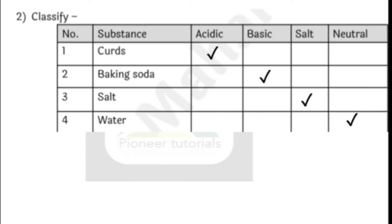Next question. Question number 2: Classify the substance as acidic, basic, salt, or neutral. The first one — curd. Curd is acidic. Second — baking soda. Baking soda is basic. Third — salt. Salt is salt. Fourth — water. Water is neutral.